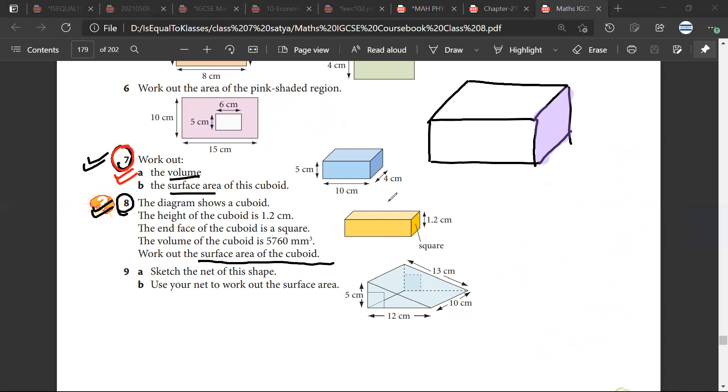So this is a cuboid that I have. It is 1.2, it is 1.2, so this height is 1.2 centimeter. And face of the cuboid is a square, so this is a square. Sarthak, have you understood? Sarthak, have you understood? Yes sir.